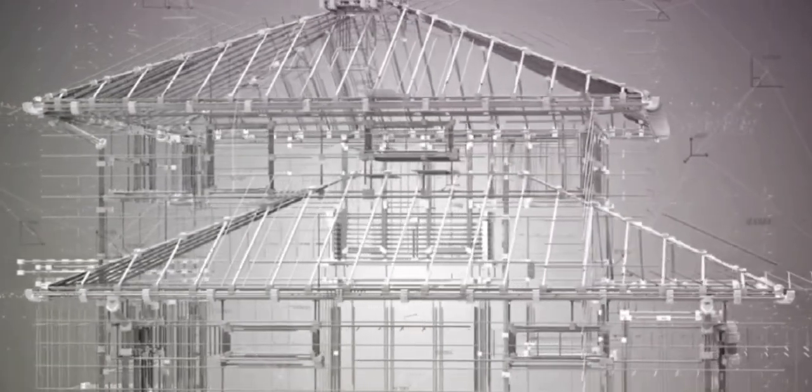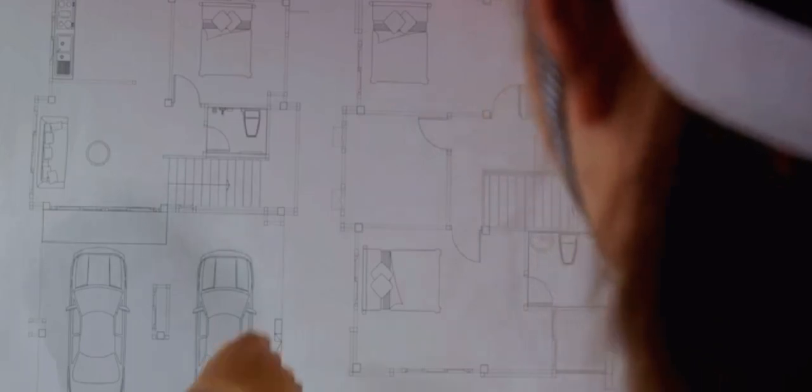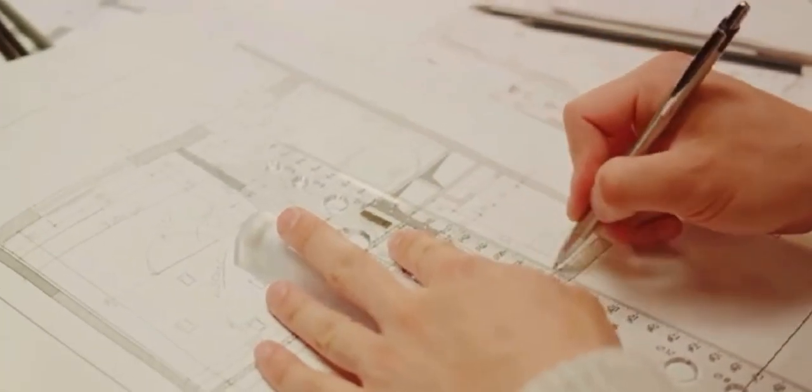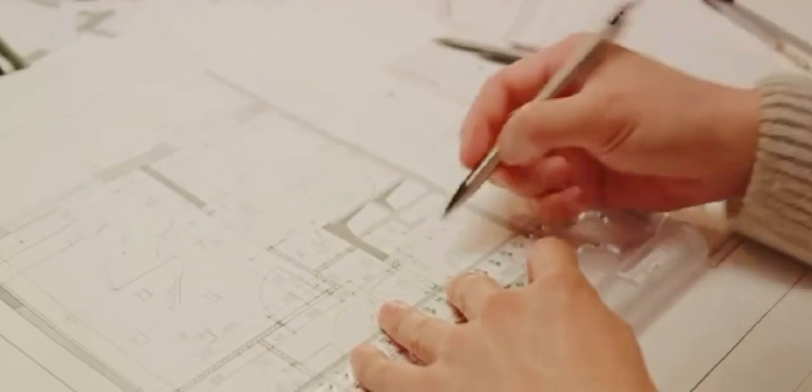The architect works with engineers to ensure the building's stability and safety. Following the design development is the construction documents phase. Here, the architect creates detailed drawings and specifications that will guide the construction team. These documents are like a roadmap for the building, outlining every detail from the placement of walls to the type of screws used.